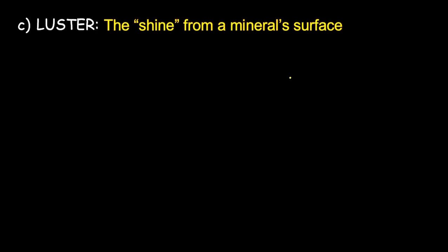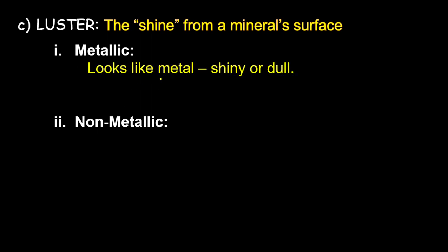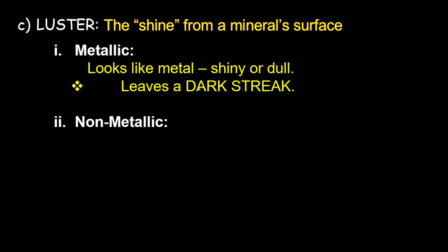Next we have luster — probably one of the easier ones to identify. Luster is the shine from a mineral surface, and we break it down into two types. You have to set aside whether something is shiny or not, and instead think of it as metallic or non-metallic. Metallic looks like metal — whether shiny or dull, because we know sometimes metal rusts. If a mineral is metallic, it will leave a dark streak.